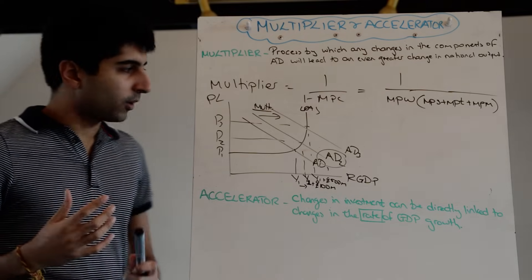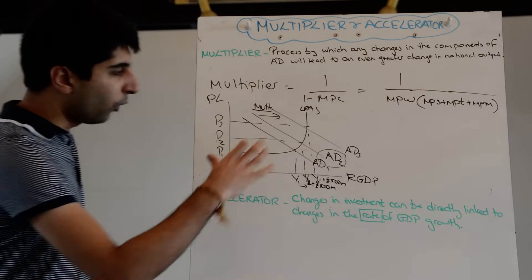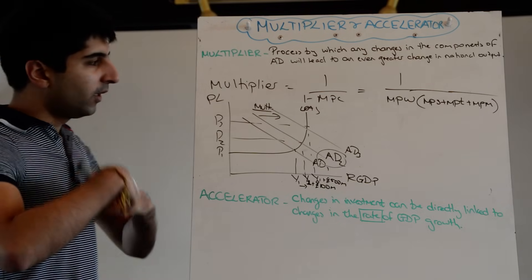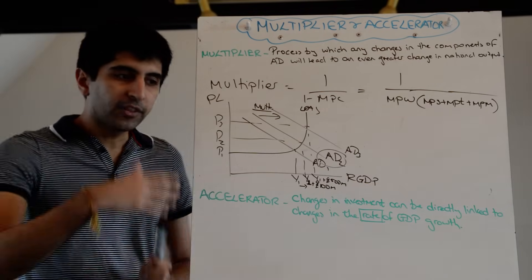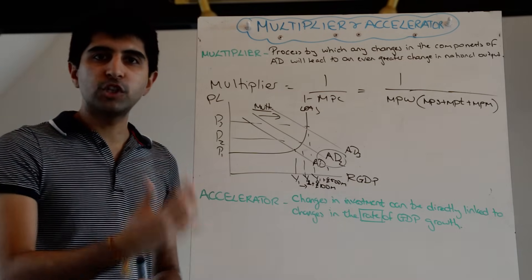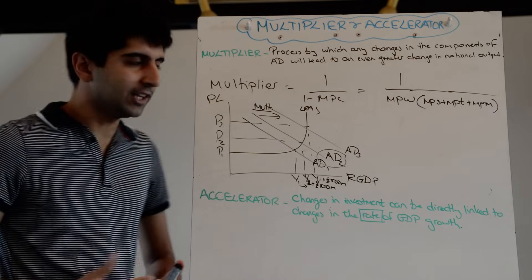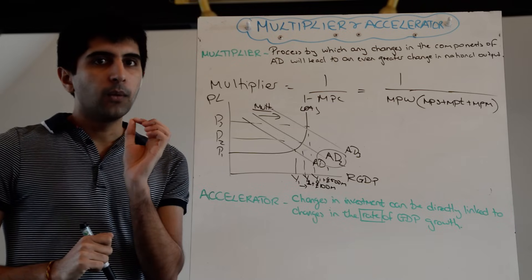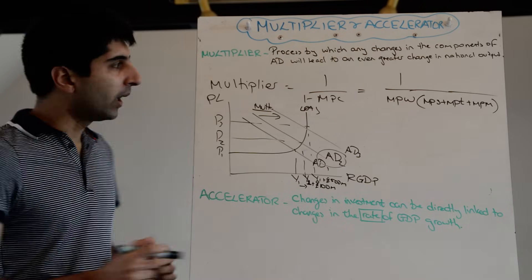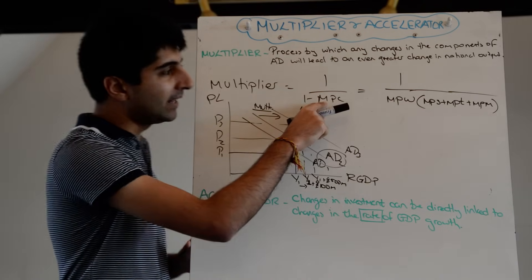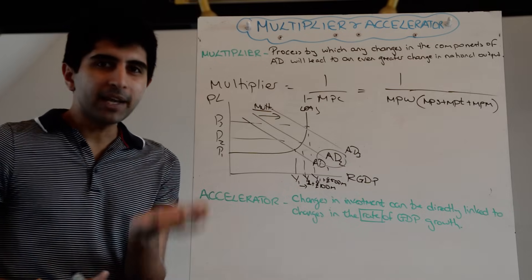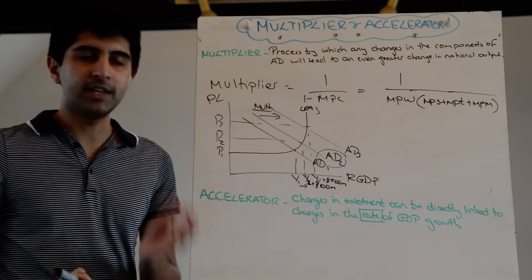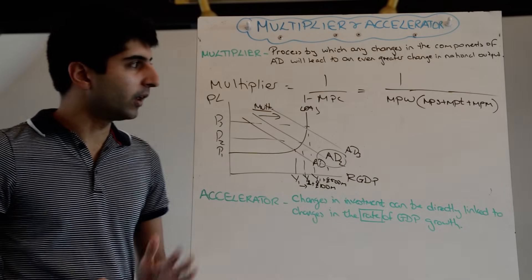What I also want to briefly talk about is what can determine the size of the multiplier. The bigger the value of the multiplier, the more the final change in real GDP will be, obviously. But what determines that value? Very simply, it's the MPC — the bigger the MPC, the bigger the multiplier; the smaller the MPC, the smaller the multiplier.